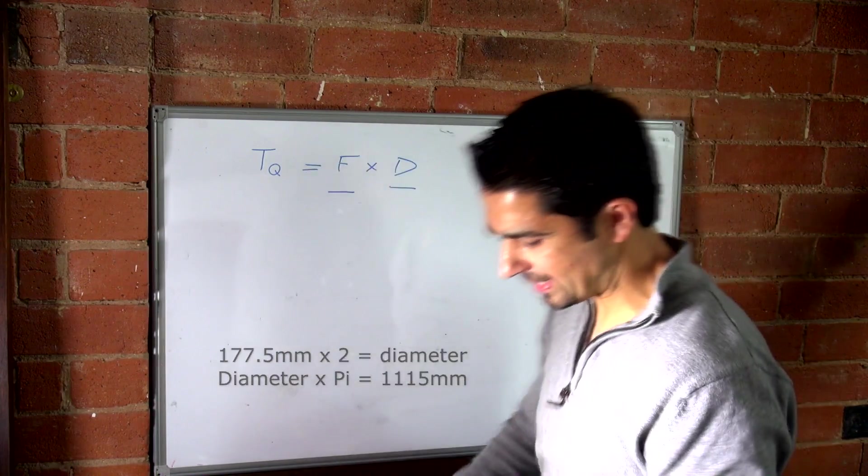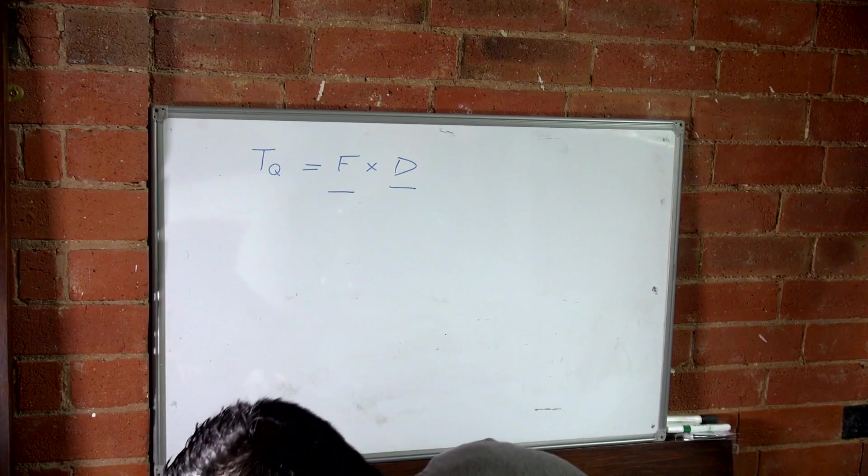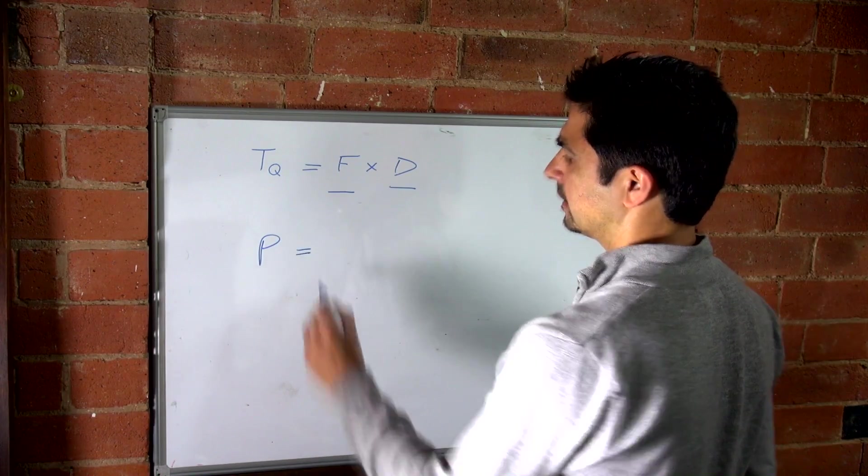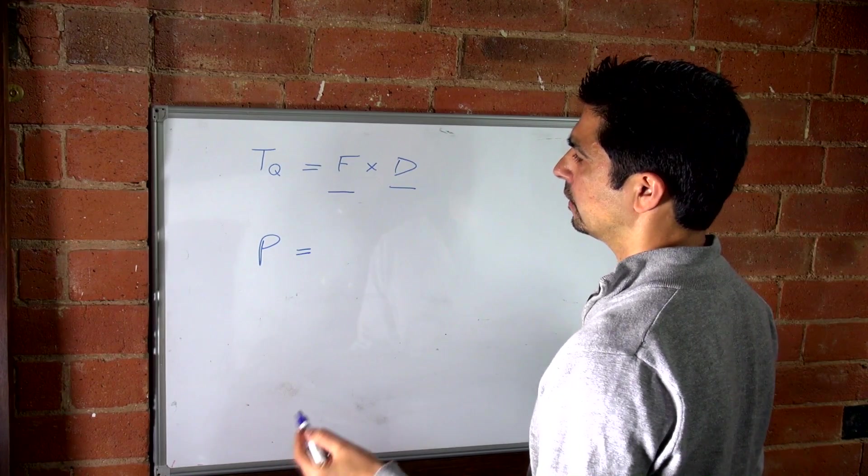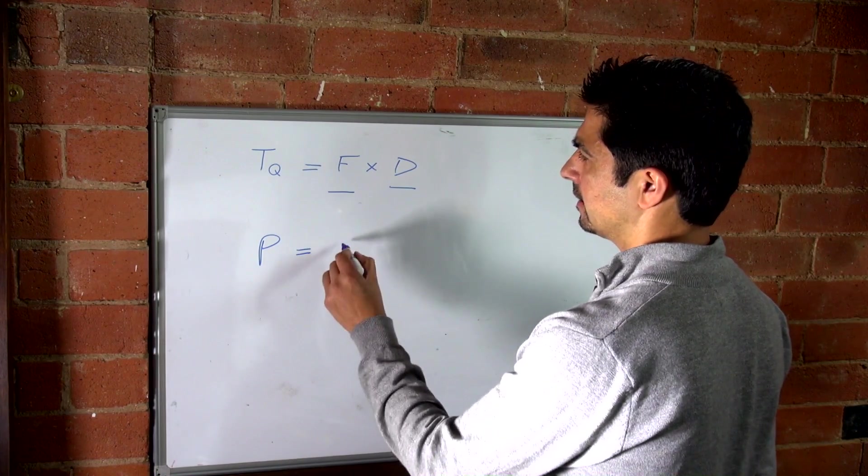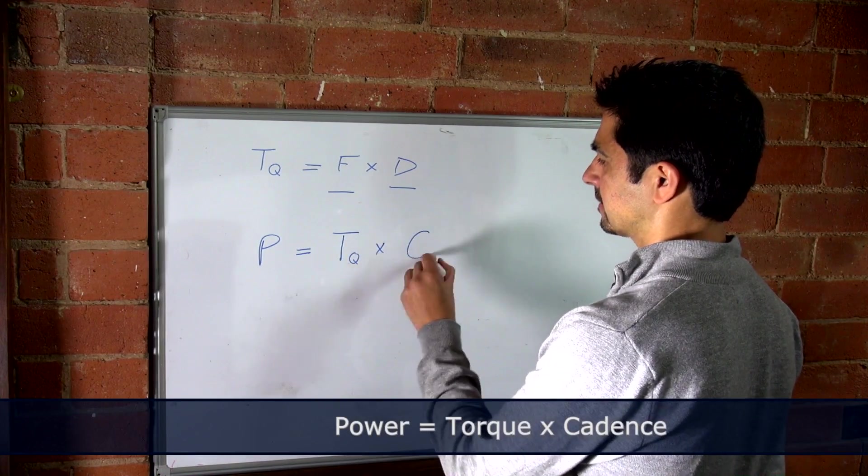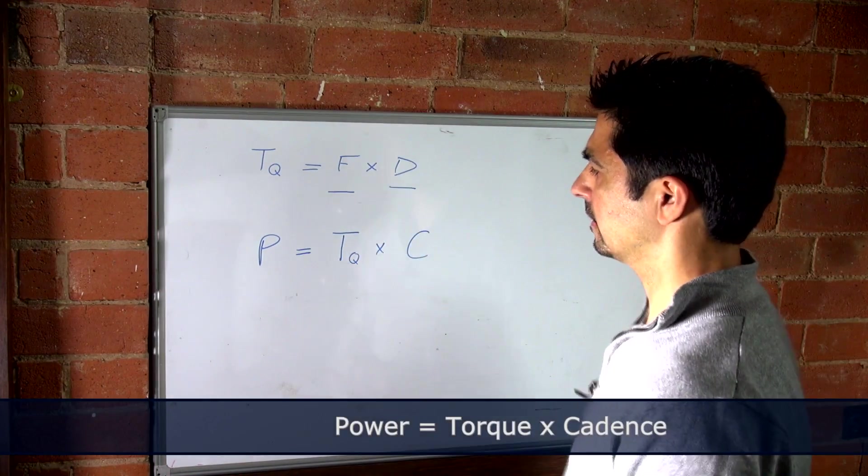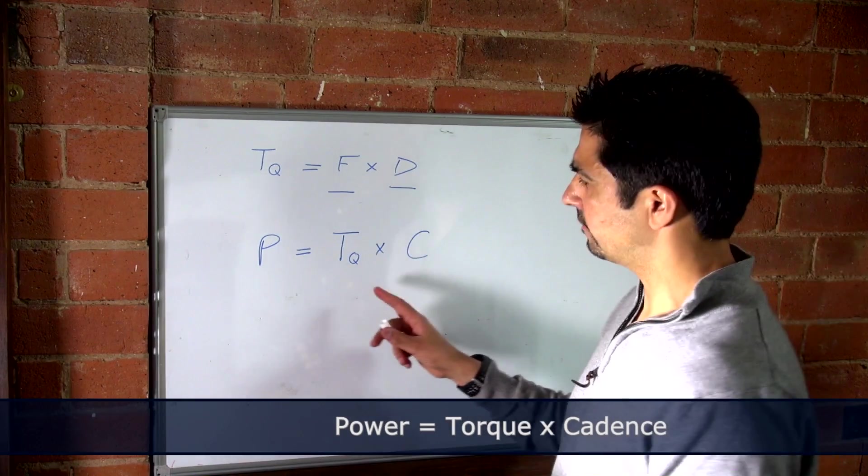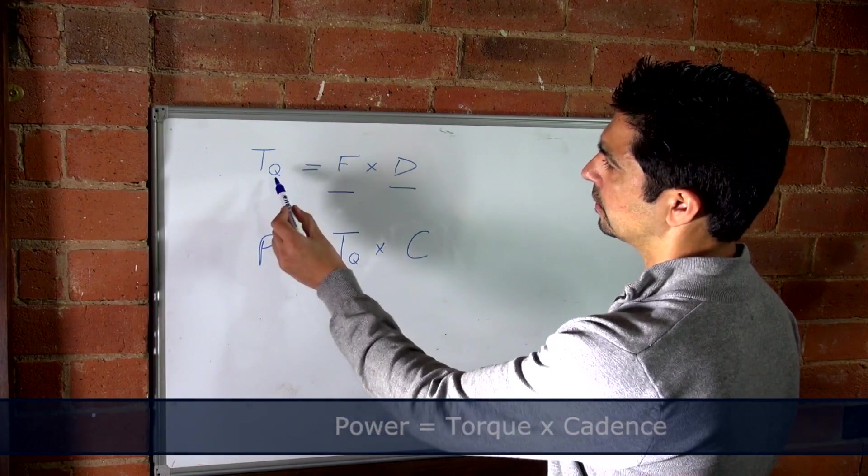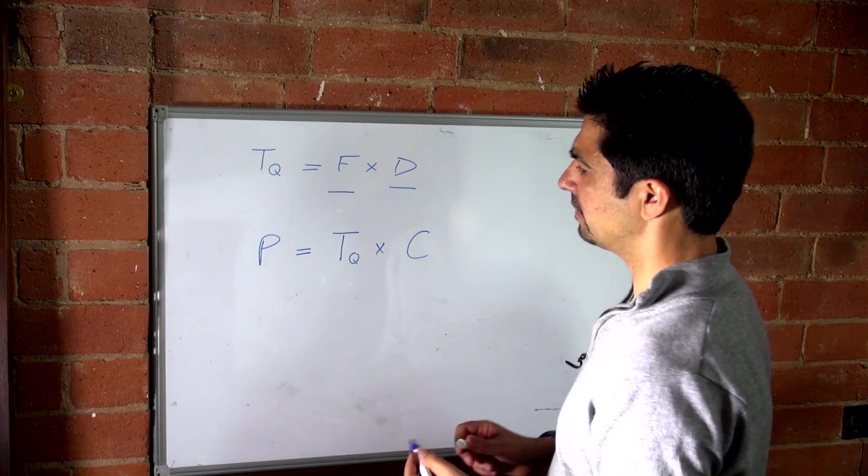Now, if you think about the relationship between power, the power generated, and the rate of cycling, or the cadence, the power is equal to the torque times the cadence, or RPM. So, if we think about this relationship for a second, if your cadence stays the same, but your torque is higher, then you're generating more power.